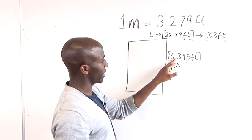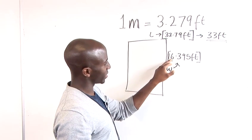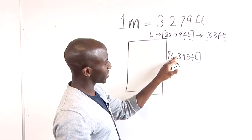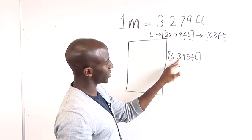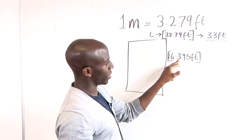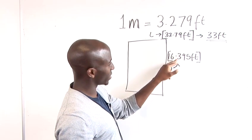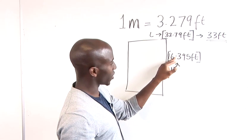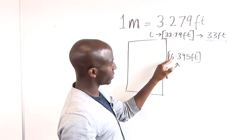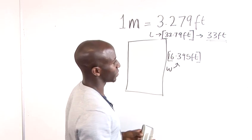Now we do the same thing here. We check this number, 16, and we say is the next number to the decimal point bigger than 5 or lower than 5? So we see that it's lower than 5. So we just keep this number the same.